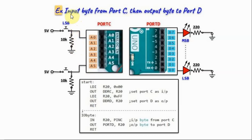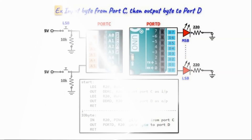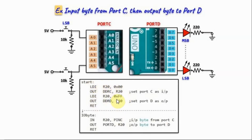In this next example, we want to input a byte from port C and then output the byte to port D. This is port C on the Arduino Uno. As mentioned earlier, we only have access to six pins of this port, so we connect six push buttons to this port. For port D, we have access to all eight pins, so eight LEDs are connected to port D. In the first part of the assembly code, we are initializing the ports. First, we send zero to the data direction register of port C to set port C as input.